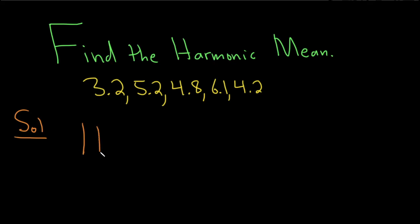So the formula for the harmonic mean is the following. It's going to be 1 over n, where n is how many numbers you have, times the sum of the reciprocals of your data set. And using some algebra, you can rewrite this as n over the sum of the reciprocals.